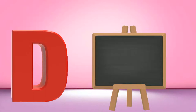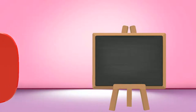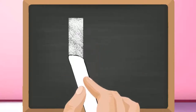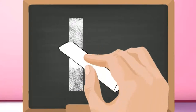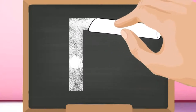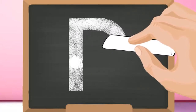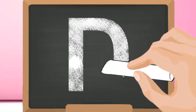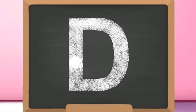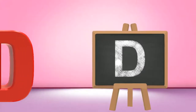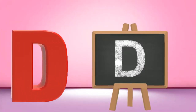D, capital D. Start from the top and draw a standing line down. Go again to the top and draw a curve till the bottom. Capital D.